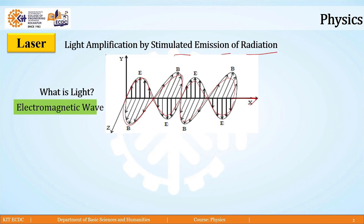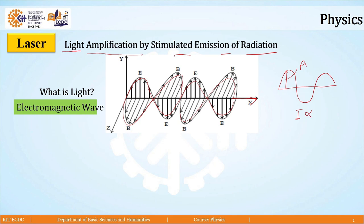As you see in the full form of laser, we have light amplification. What does amplification actually mean? Amplification is related with amplitude. In a wave, the maximum displacement from mean position is what we call amplitude, and for any wave the intensity is directly proportional to amplitude squared.